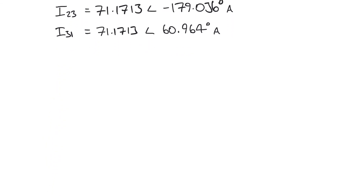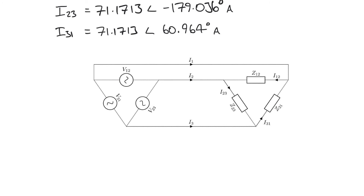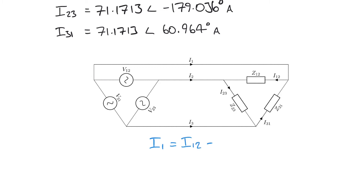Let's go back to the diagram. Taking the line current I1 — the current in the line rather than in the phases — when I1 reaches the load, it meets a junction of two phase currents: I1,2 and I3,1. I1,2 is flowing in the same direction as I1, but I3,1 is flowing in the opposite direction. So I1, the line current, must be the difference: I1 = I1,2 − I3,1.